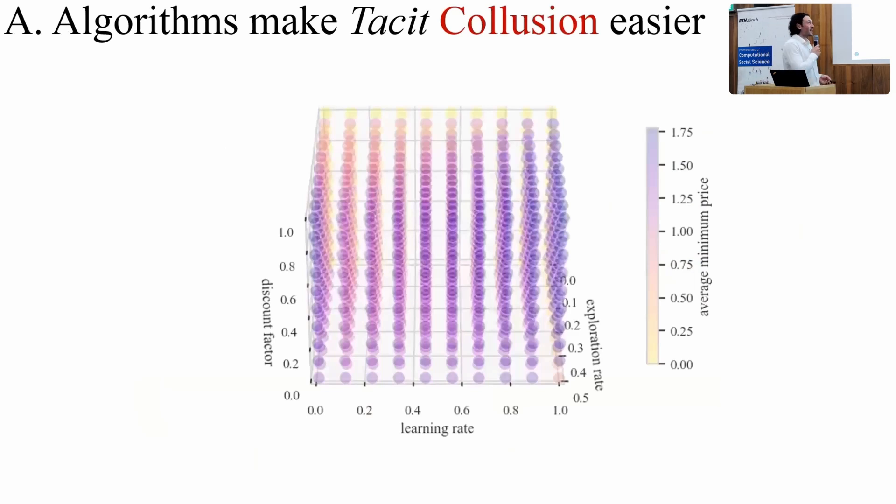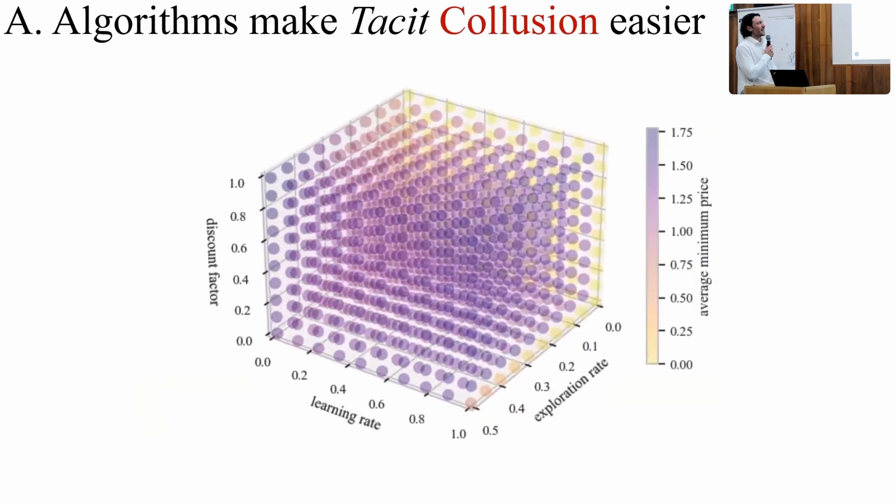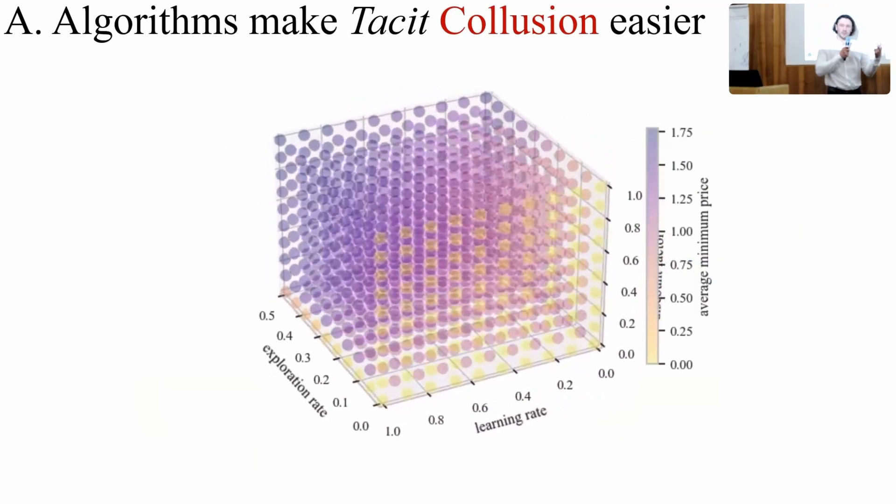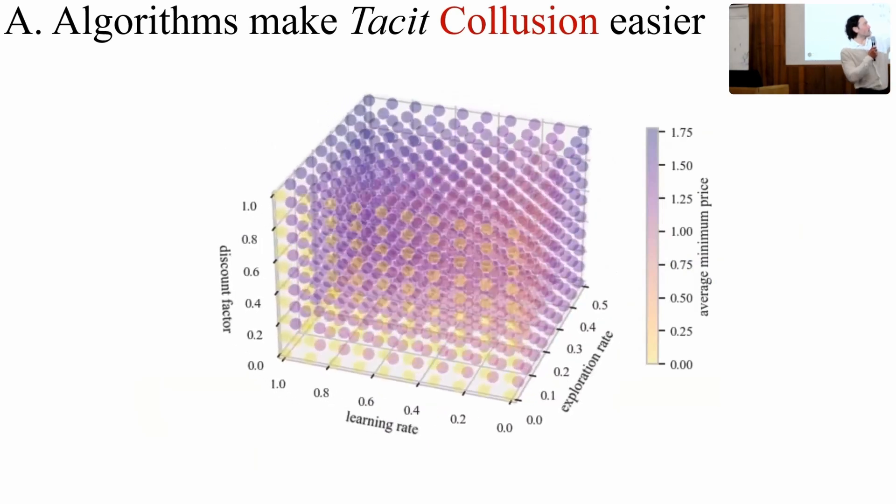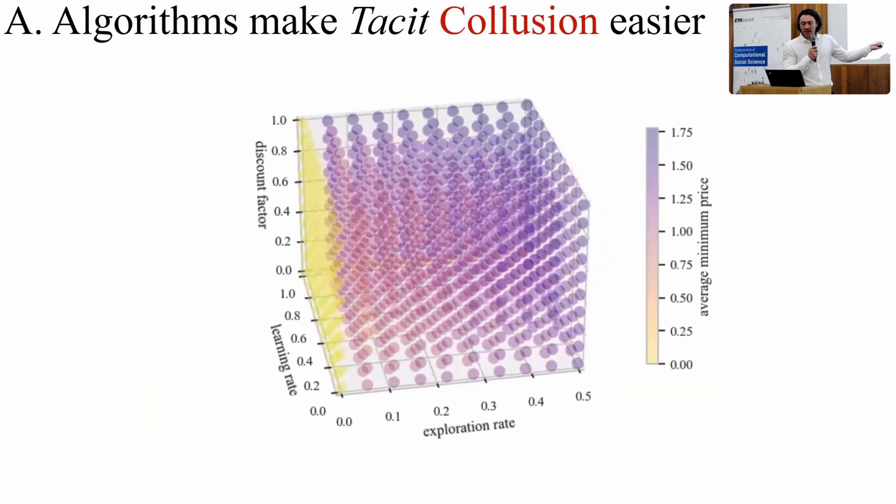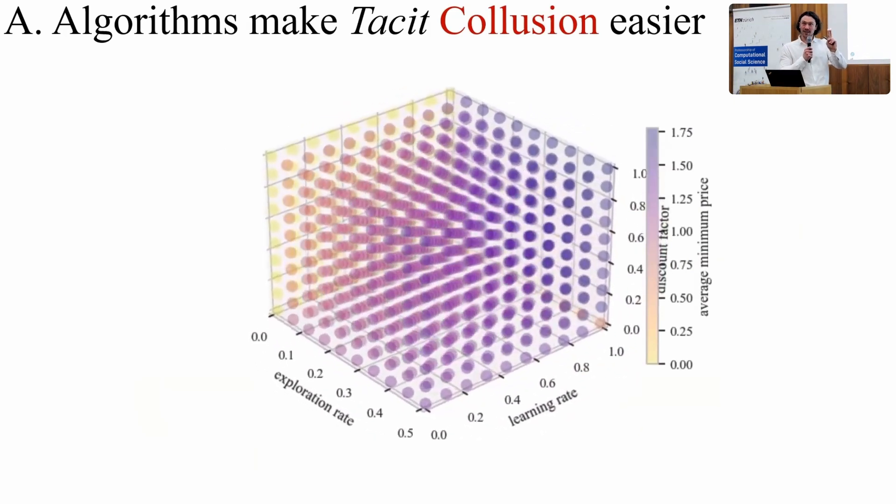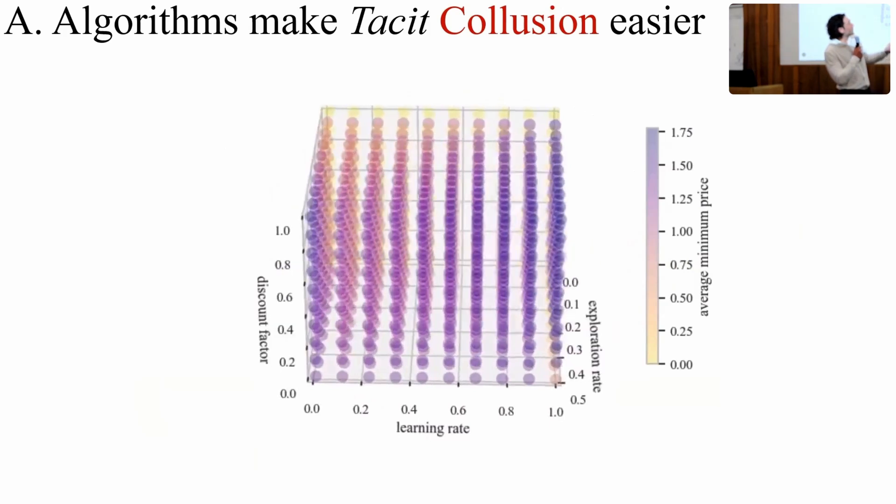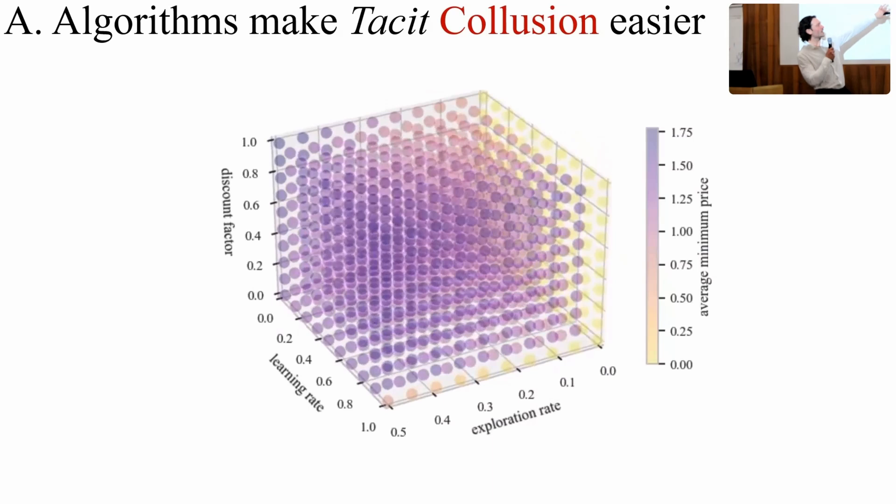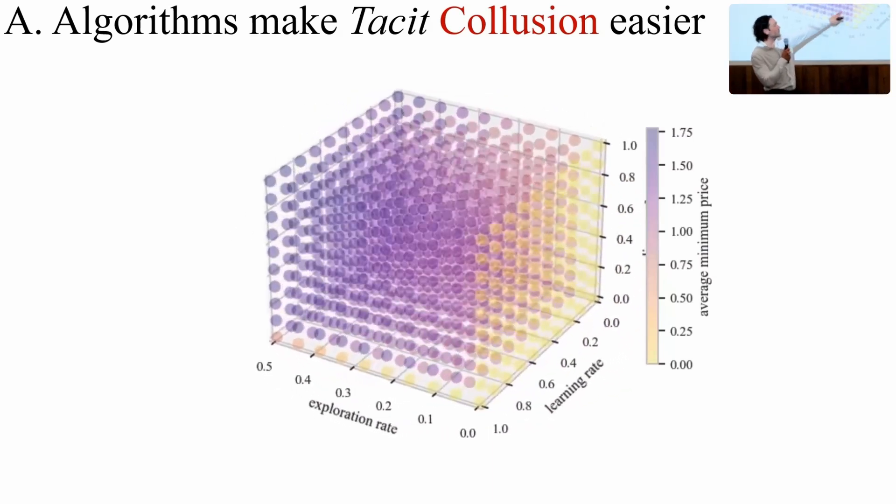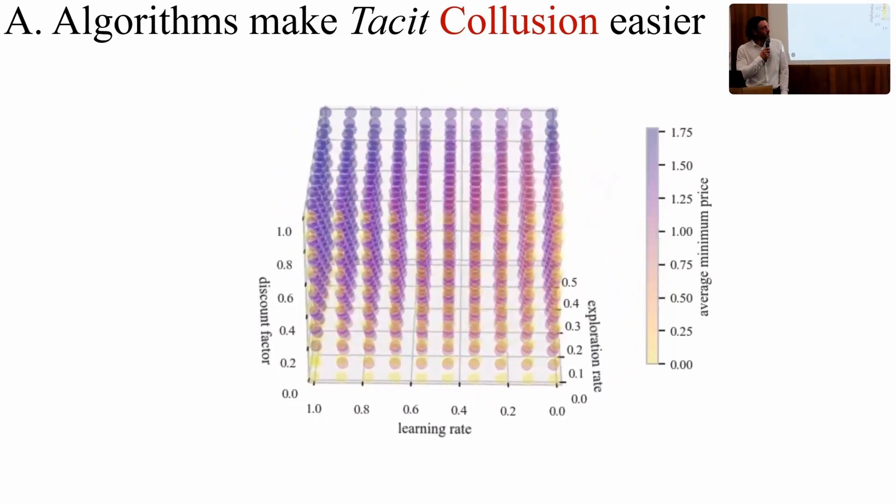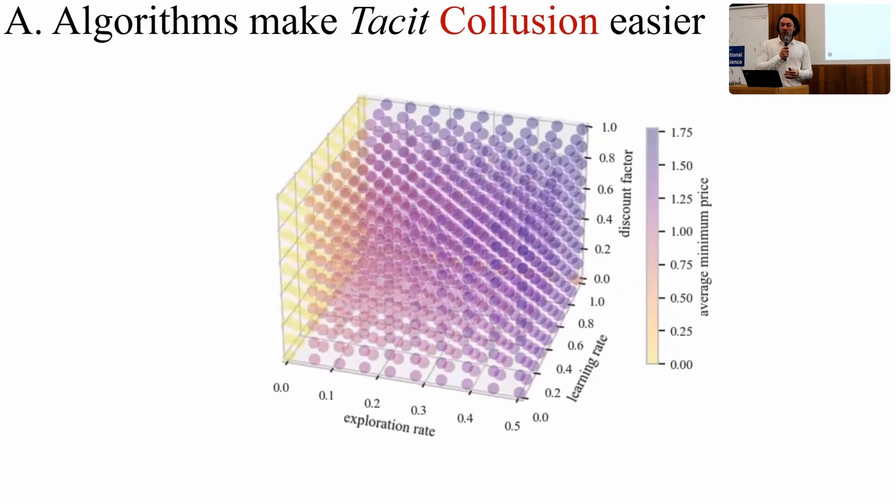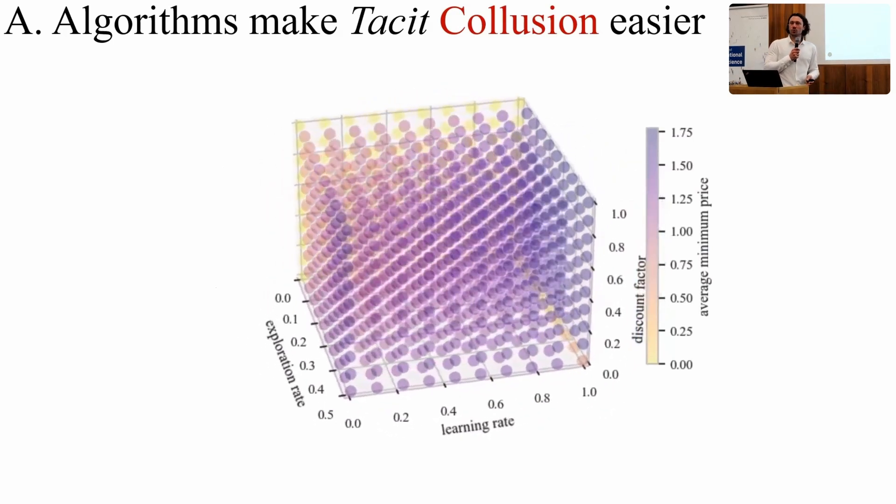So do algorithms make tacit collusion easier? And in short, in our system, it seems so. So we can represent our entire parameter space in this 3D plot, where we have three axes and the three learning parameters. And on the screen, we have these symmetric combinations where both players set the same parameterization. And the dark regions are collusive outcomes. And we can see that the only non-collusive outcomes are for an exploration rate of zero, this face. So what we can intuit from this space is that for all these symmetric combinations, the outcomes are quite collusive. It's almost like if we just pick some parameters at random, we will get some super competitive prices.